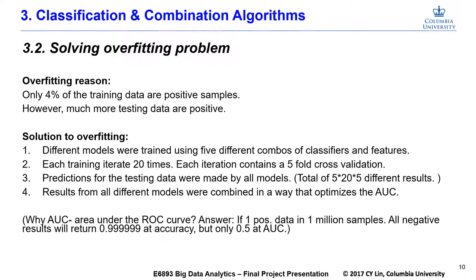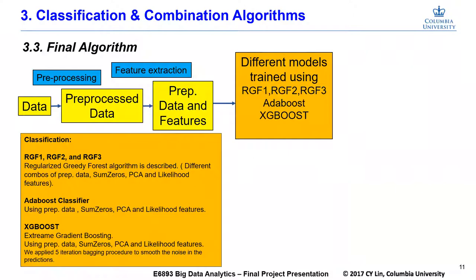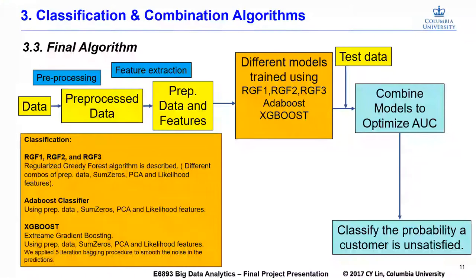In the final algorithm, after data preprocessing and feature extraction, different models were trained using RGF, XGBoost, and other methods. Then all the models were combined in a way to optimize the AUC. The combined models were used to classify the probability a customer is unsatisfied.